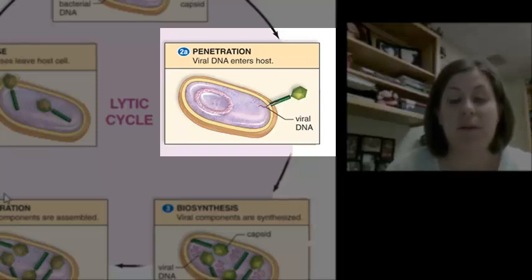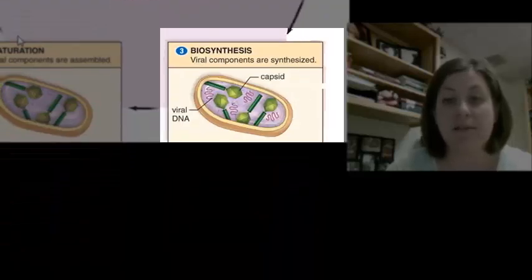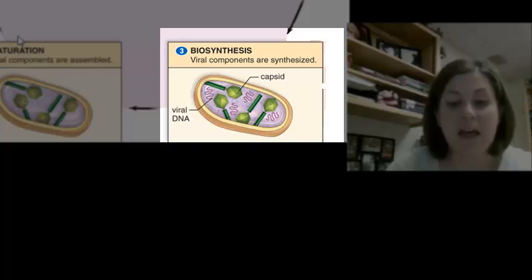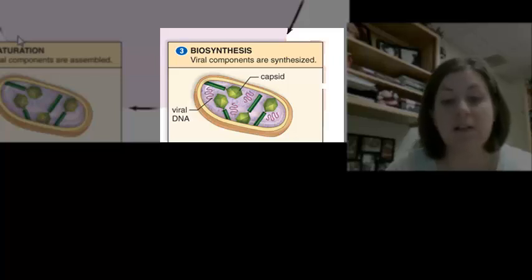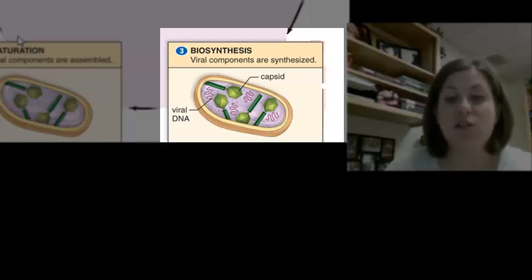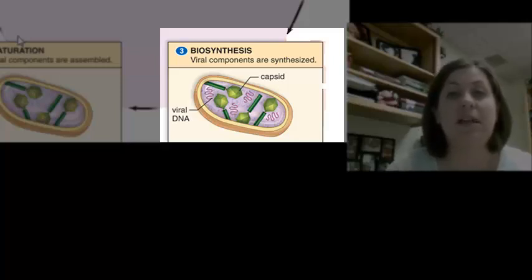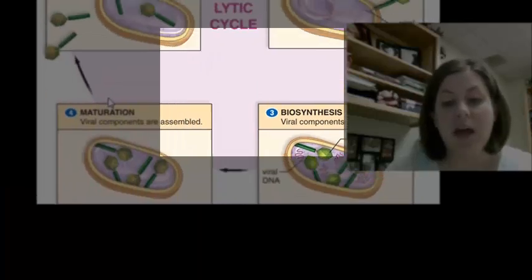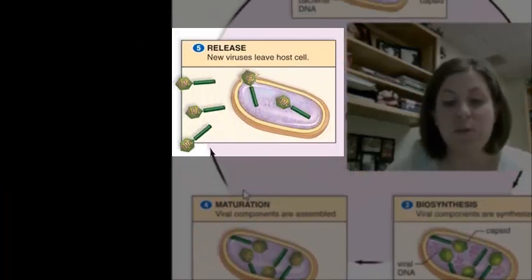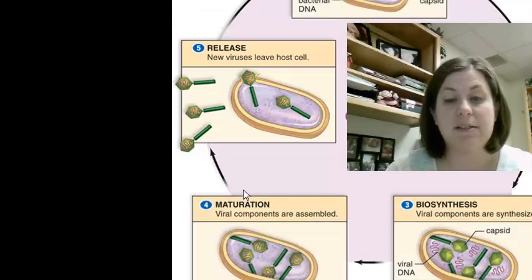Now that the genetic information for the virus is inside the cell, the third stage, which is called biosynthesis, can begin. The virus then hijacks the cell organelles and forces the cell to begin manufacturing viral parts. Stage four is what we call maturation. This is when the cell begins to assemble the new viruses so they can get ready to be released. The last stage is release, and this is when the host cell is going to rupture or open up and release all the newly made viruses. Each virus now can go attack a new cell.